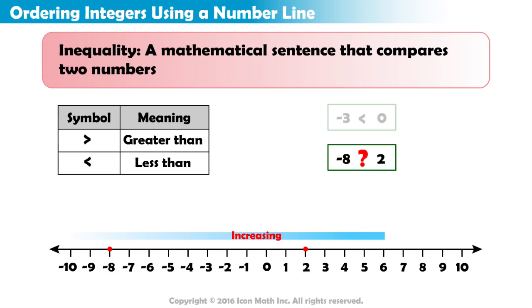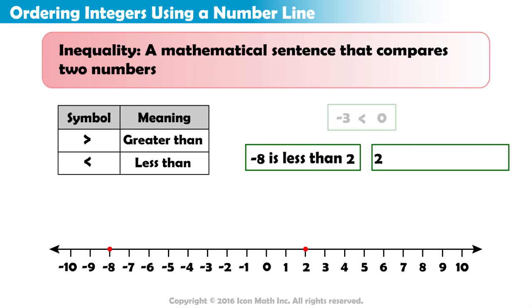Since a number line increases from left to right, we know that negative 8 is less than 2, or 2 is greater than negative 8. We can write this using the number sentence like this, or like this.